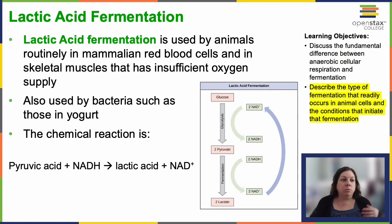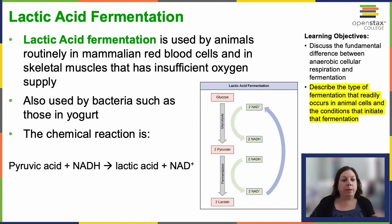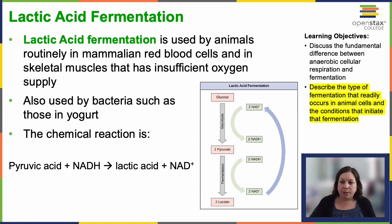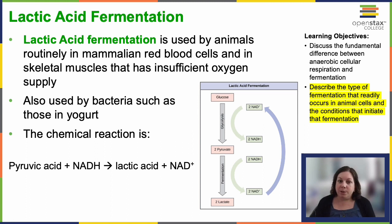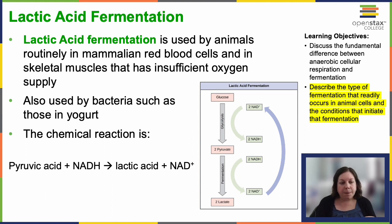Lactic acid fermentation: animals and some bacteria, like those in yogurt, employ lactic acid fermentation. This process is common in mammalian red blood cells and in skeletal muscles with inadequate oxygen for aerobic respiration, such as fatigued muscles. In these muscles, the lactic acid produced through fermentation gets transported via the bloodstream to the liver for further processing.